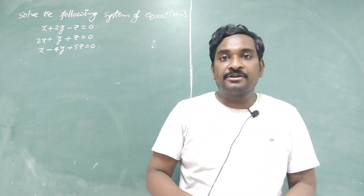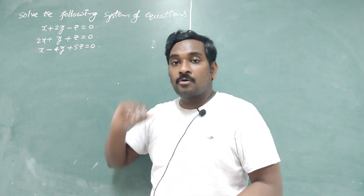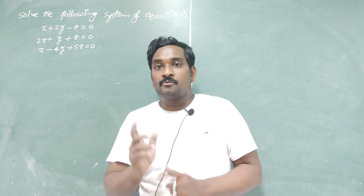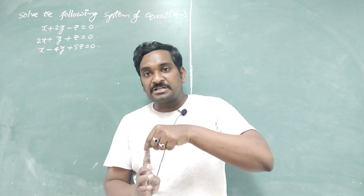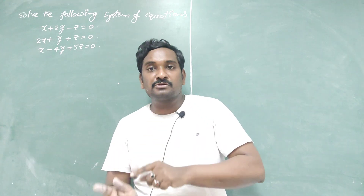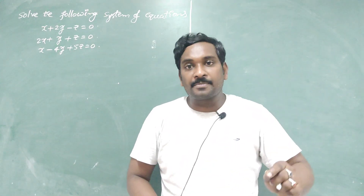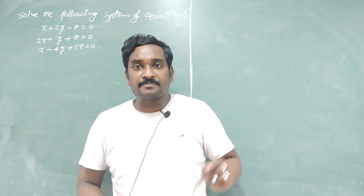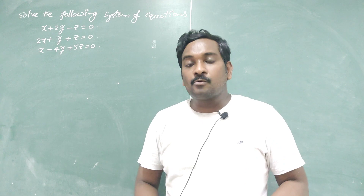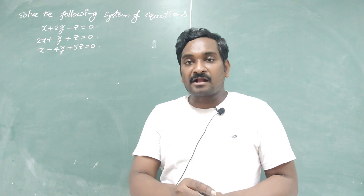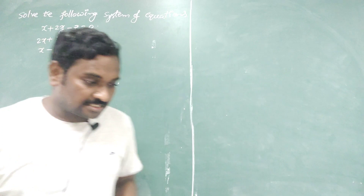In an earlier video, we discussed how to solve a given system of homogeneous equations. First of all, we have to write the matrix form. After that, by taking the coefficient matrix A, we have to reduce that coefficient matrix A into echelon form by applying only row operations. After getting the rank, we have to compare the rank of A with the number of unknowns. That is the procedure.